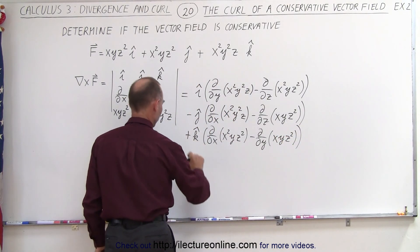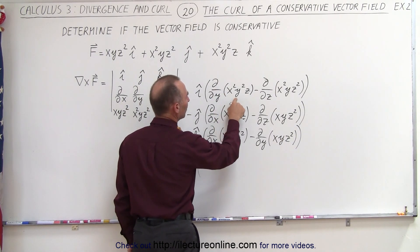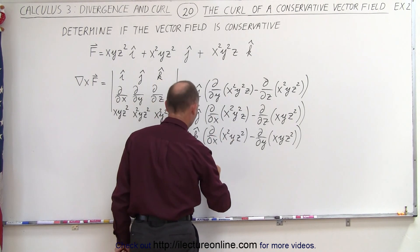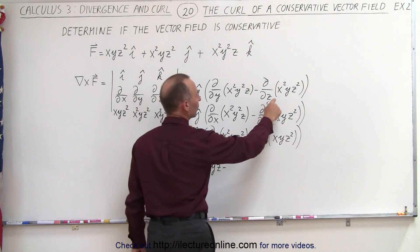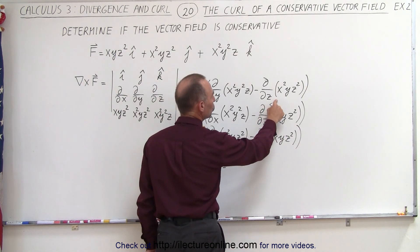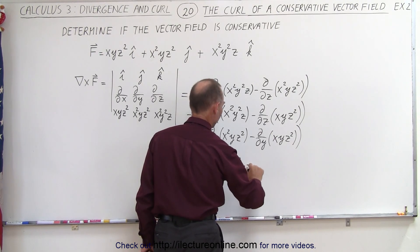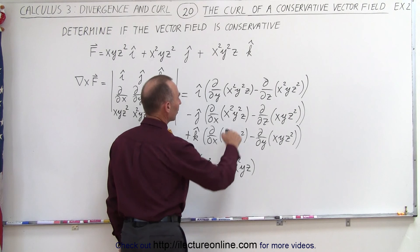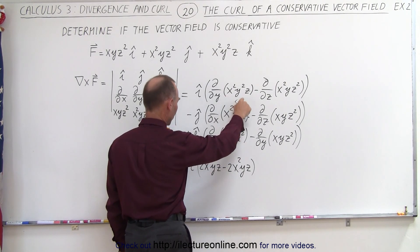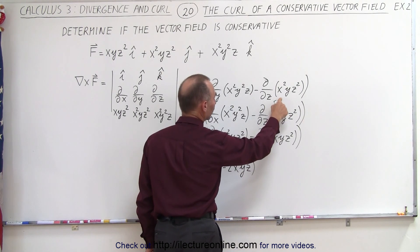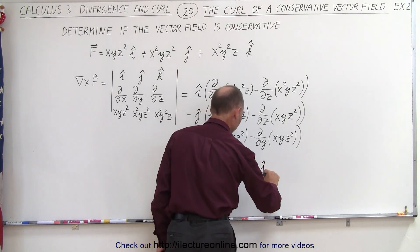That is equal to: i times the partial with respect to y of x²y²z, which is 2x²yz, minus the partial with respect to z, which is also 2x²yz. Those cancel each other out — so the i component is zero.